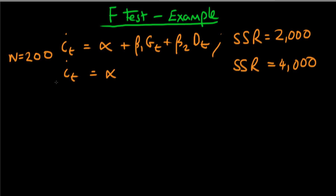In this video we're going to be talking about how we actually go about testing for significance of multiple coefficients. The null hypothesis here is that beta1 is equal to beta2, which are both equal to zero. So we're testing whether jointly g and d are not significant in determining our dependent variable.